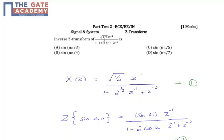We also know the formula for Z transform of sin(ω₀n) is equal to sin(ω₀) times Z^(-1) divided by 1 minus 2cos(ω₀)Z^(-1) plus Z^(-2). Let us name this as equation 2.